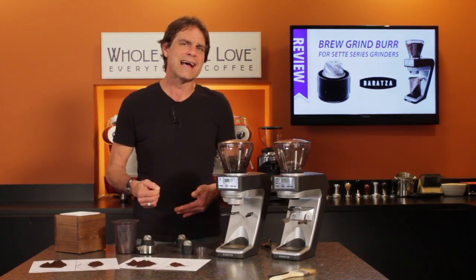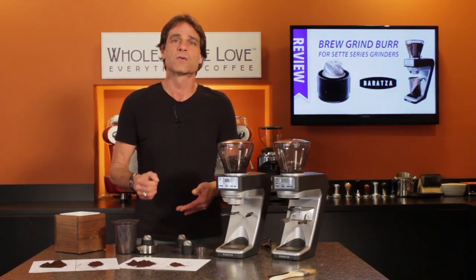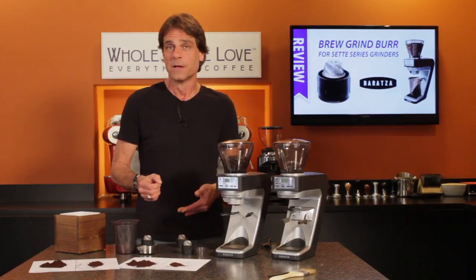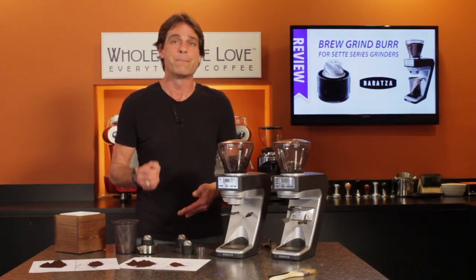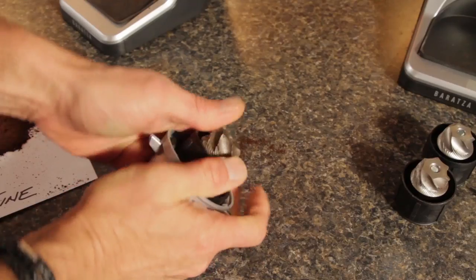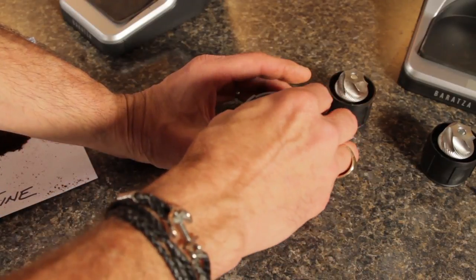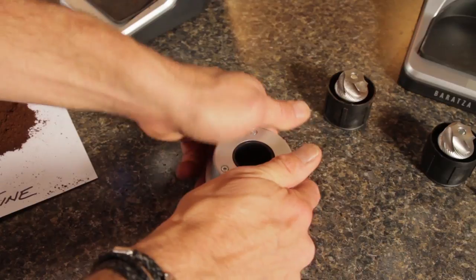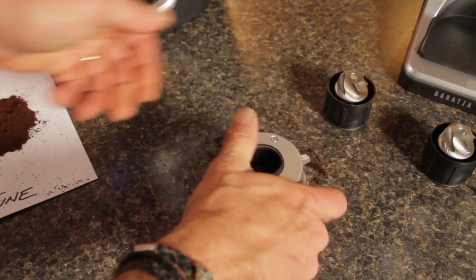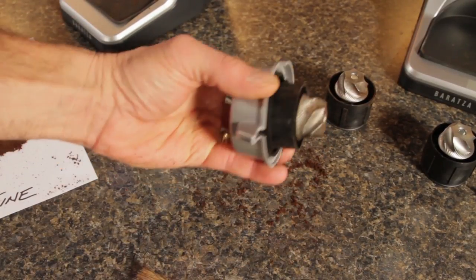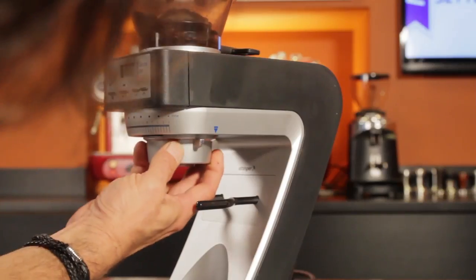A more consistent particle size and the ability to get a little coarser grind for immersion brewing methods will go a long way to making a better cup of coffee. With quick and easy installation and a cost that's just a hair over $25, the BG accessory burr for Setté grinders is an easy investment in a better cup of coffee when brewing in that medium to coarse grind range.